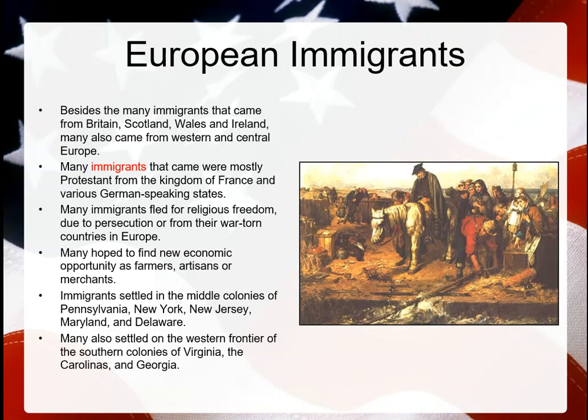People are trying to get away for a new life, a fresh start. Many hoped to find economic opportunity as farmers, artisans, and merchants in the colonies. Immigrants settled in the middle colonies of Pennsylvania, New York, New Jersey, Maryland, and Delaware. Many also settled in the western frontiers of Georgia, the Carolinas, and Virginia. Immigrants are coming everywhere, and the allure of freedom and having land is just too powerful a notion to pass up.